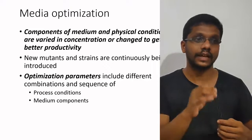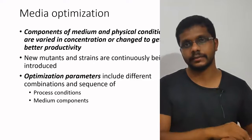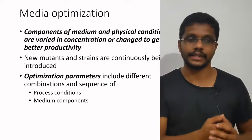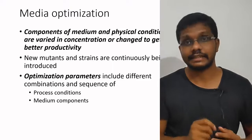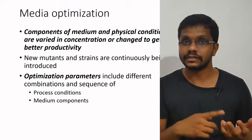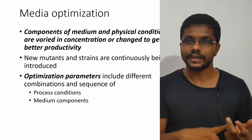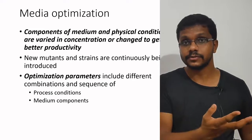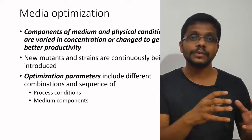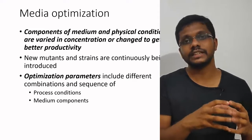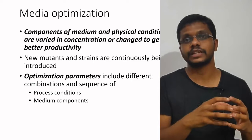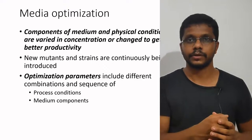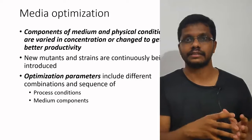So first thing is the components of the medium and the proportion of components to be added. Secondly, physical conditions, including temperature, pH, incubation time, inoculum size, etc. These things need to be controlled. What should the temperature of the fermenter be during fermentation? It may not be a fixed temperature — at the beginning it may be low, and as the fermentation progresses, it may increase.